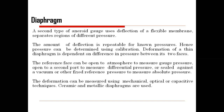The second type of gauges uses deflection of a flexible membrane that separates regions of differential pressure. The amount of deflection of the diaphragm is repeatable for a known applied pressure, so pressure can be measured using calibration.